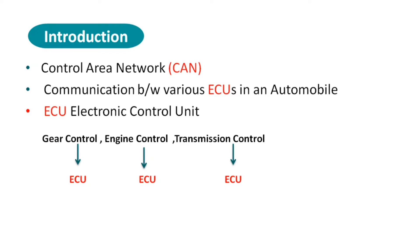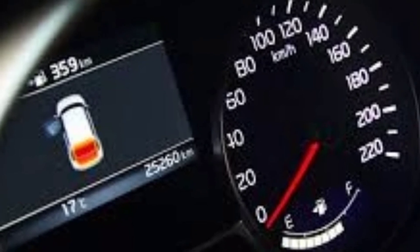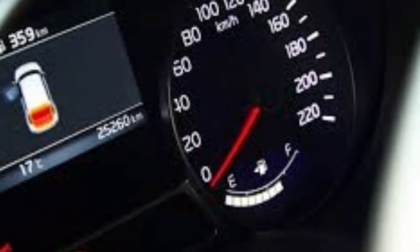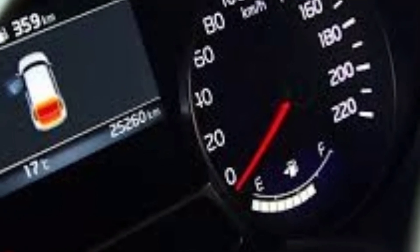Now we will explain a real-time example. Consider a car — if we don't lock the door, when the door opens, there will be a chance of accidents. So, if we don't lock the door of the car, the ECU will control the data and display it on the dashboard. The two ECUs communicate with each other using the CAN protocol, so in real-time, we can use the CAN protocol.